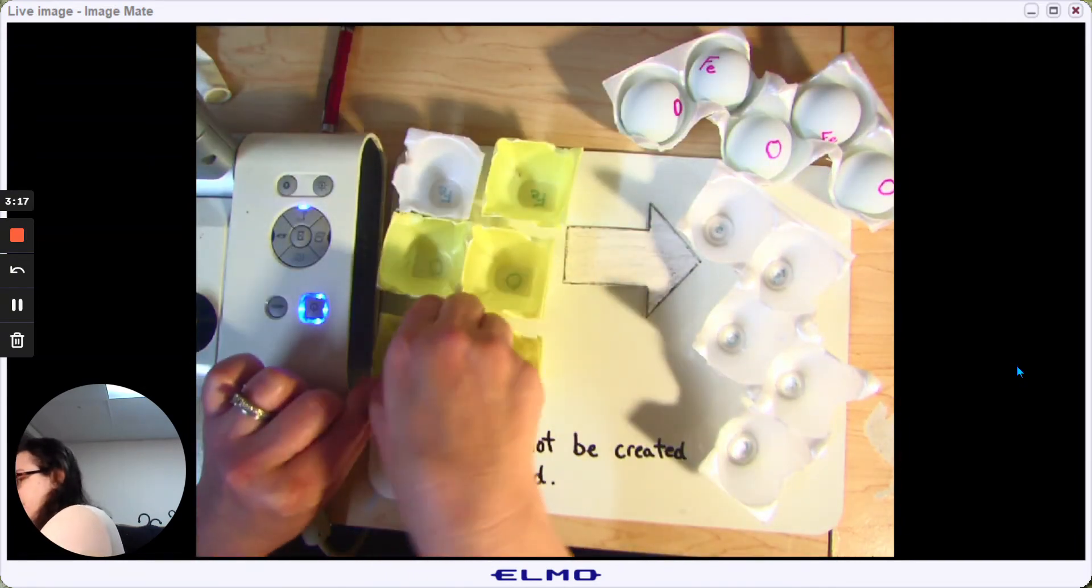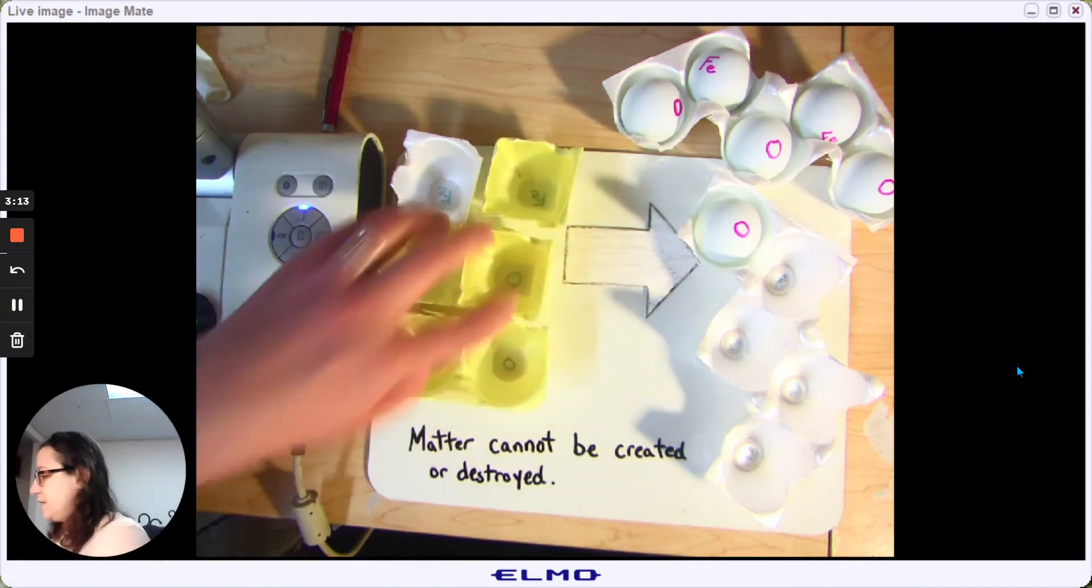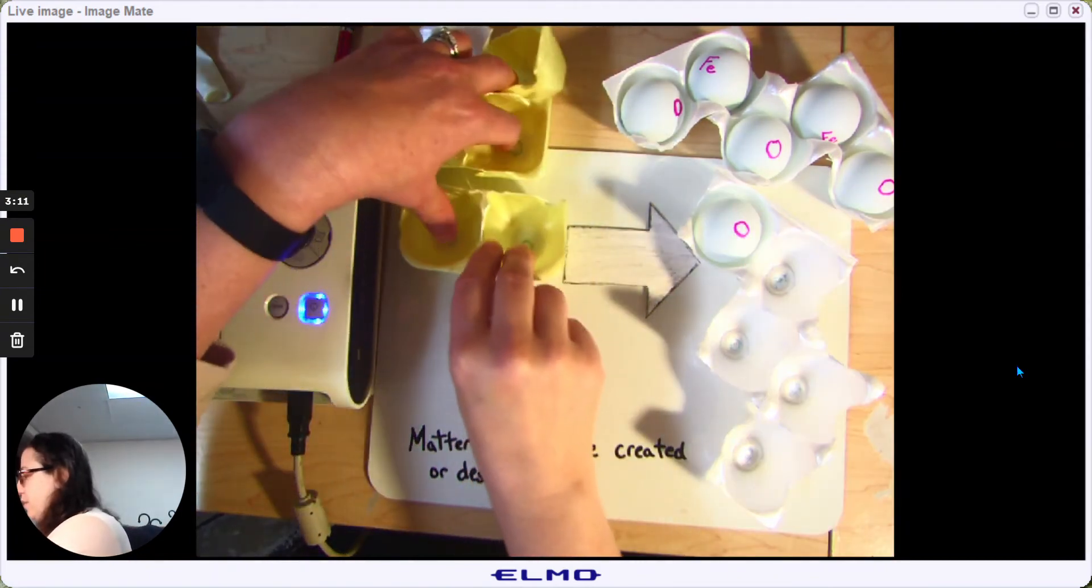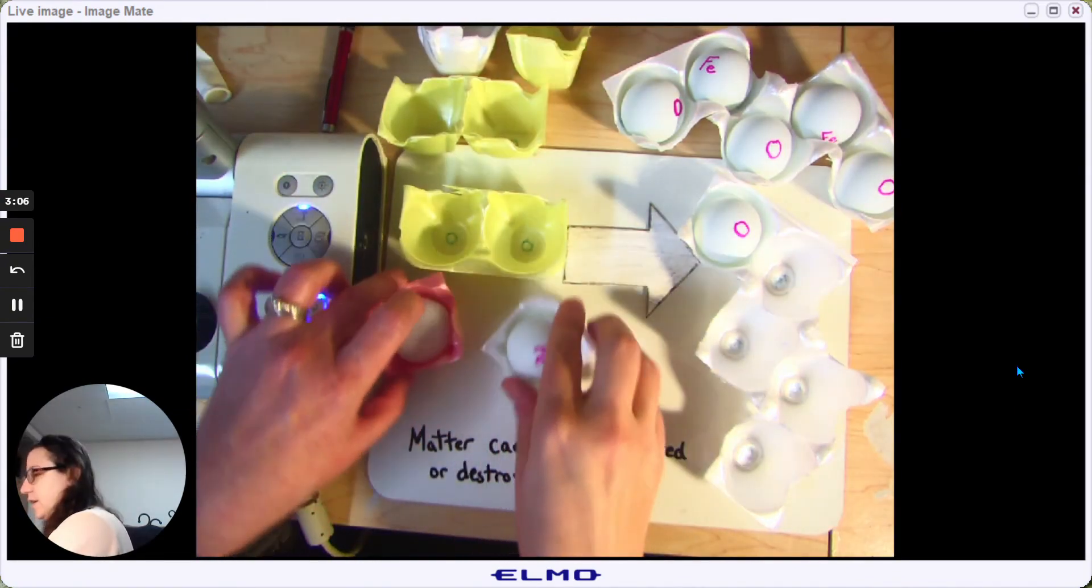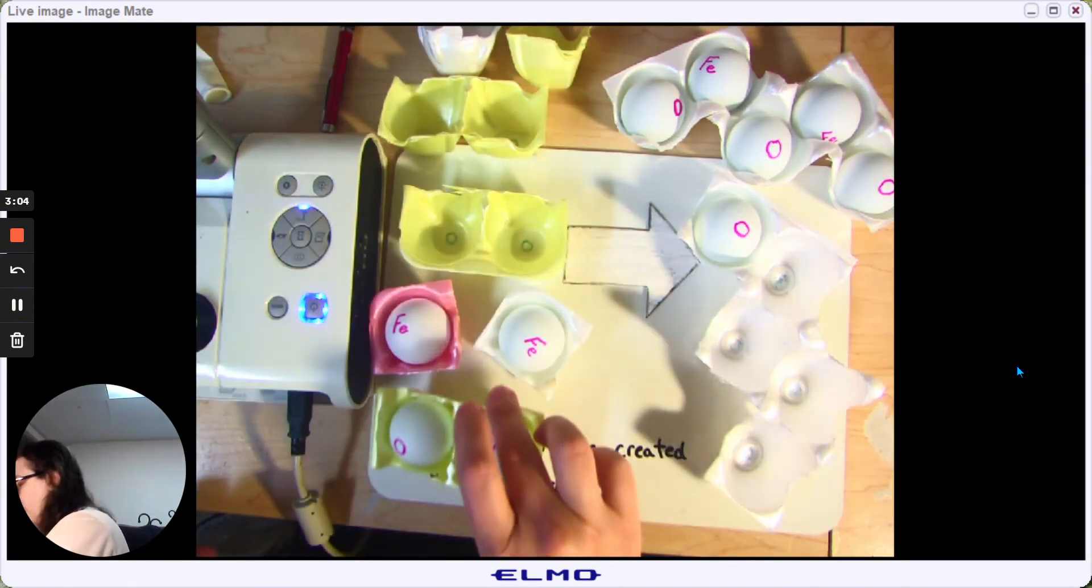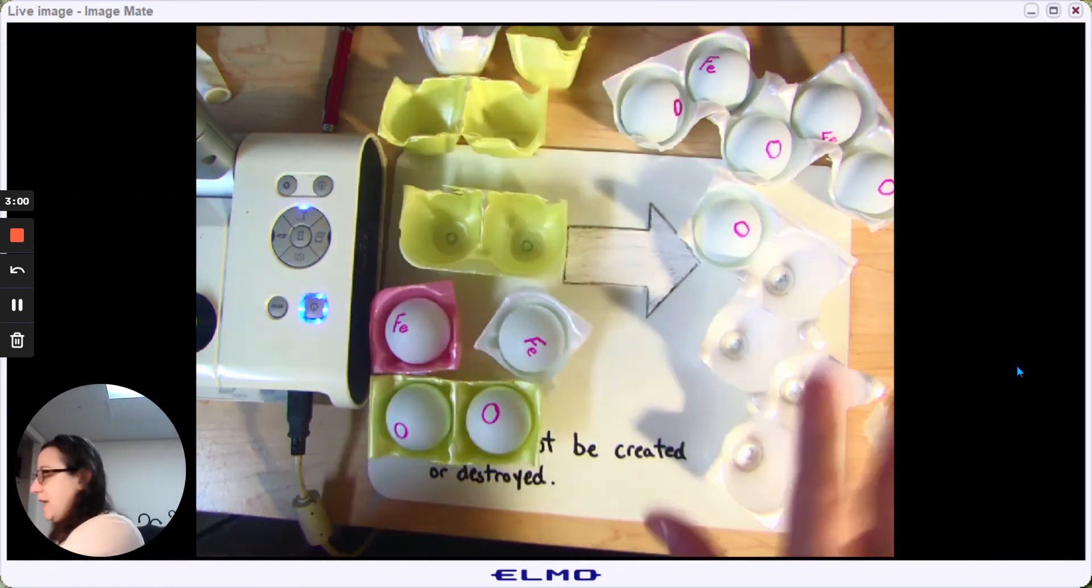And we can put this oxygen over here, but now we still don't have a good balance because this guy's by himself. So we can think about how many more rust atoms we would need and how many more oxygen atoms we would need to be able to end with an even number.